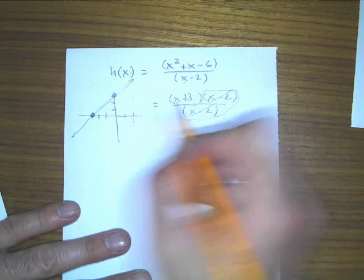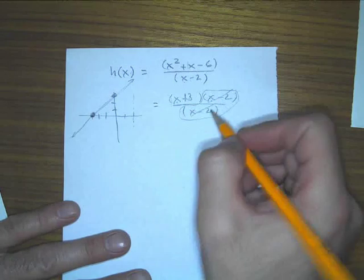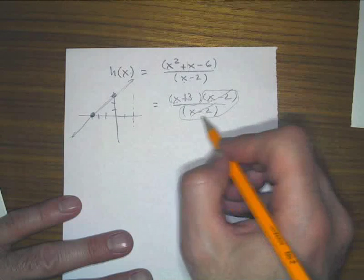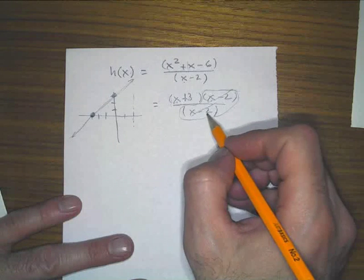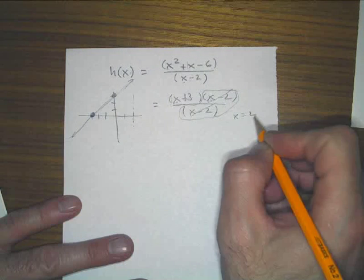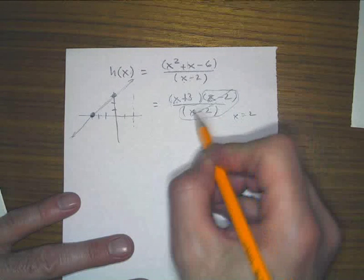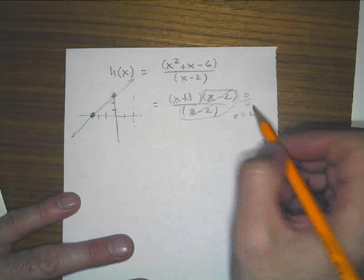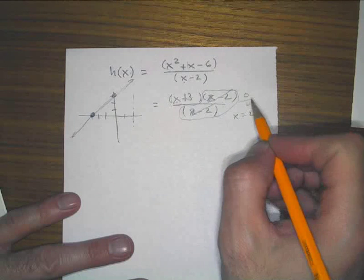And you also have the zero at negative three. But even though these things cancel out, they're still a part of the function. And so the zero for this is x equals two. And when you put a two in here and a two in here, you get zero divided by zero. And any time you divide by zero, that's undefined.